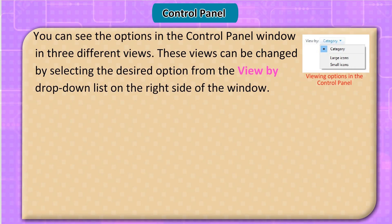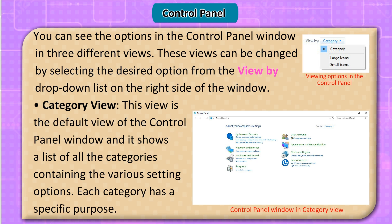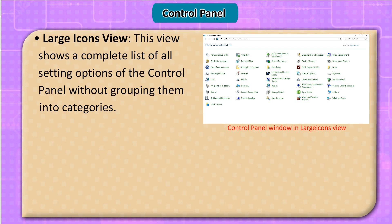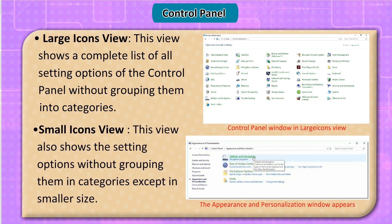You can see the options in the Control Panel window in three different views, changed by selecting the desired option from the View By drop-down list. Category View is the default view showing all categories. Large Icons View shows all settings without categories. Small Icons View also shows settings without categories but in a smaller size.